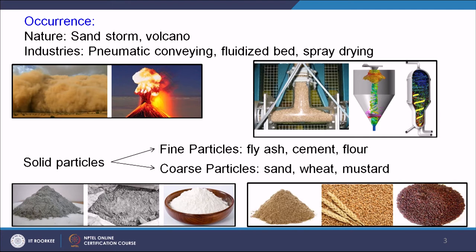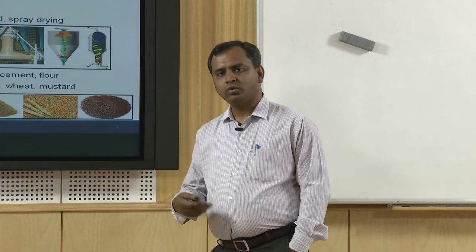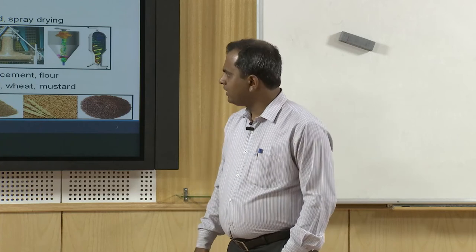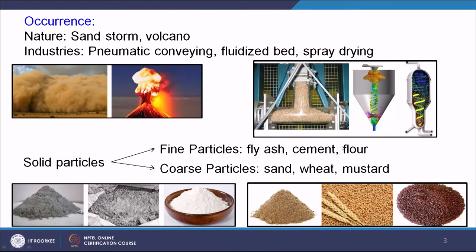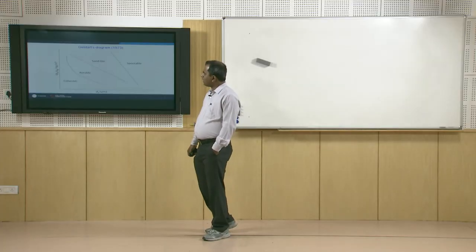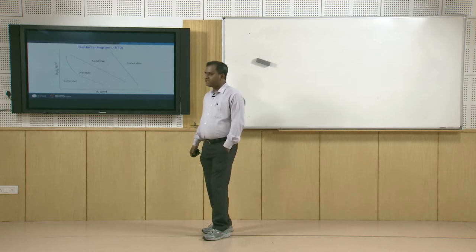There are different types of solid particles that can co-exist in gas. Depending on the size of the particles, we define them as fine particles and coarse particles. Fine particles include fly ash, cement, and flour. Coarse particles include sand, wheat, and mustard. I have shown separate figures for fine particles and coarse particles, and we need to understand how these mixtures can be categorized in terms of flow regimes.